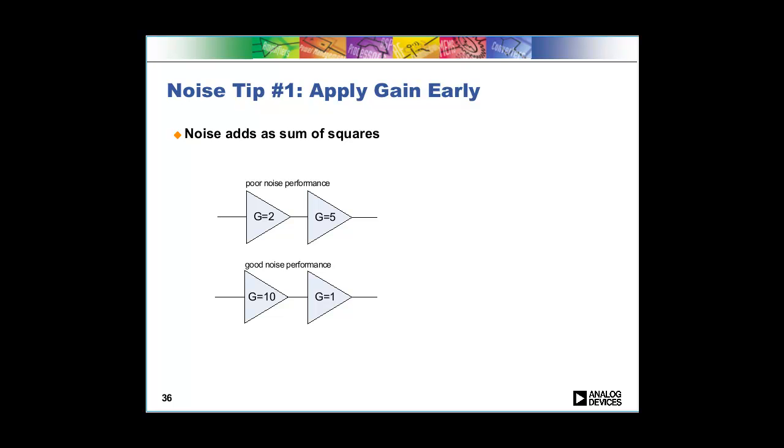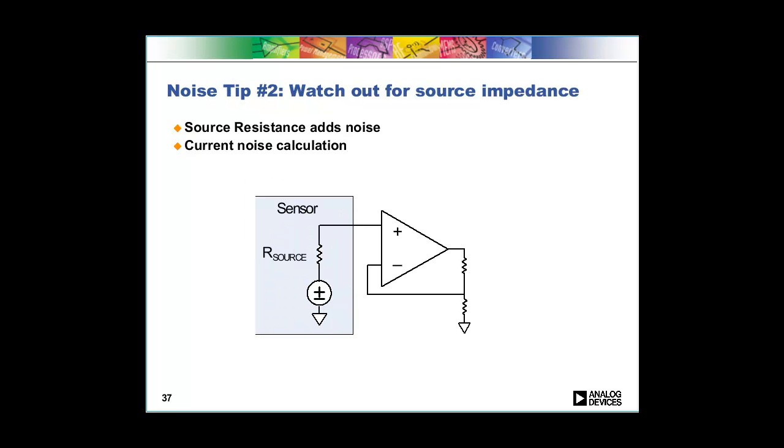In the first example we only have a gain of two at the front. If you only have this low gain at the front then the noise of your second stage can contribute to your total noise performance, so you'll get a bigger noise performance than the bottom one where we apply all your gain in the first stage and then the noise performance of the second stage doesn't really matter that much.